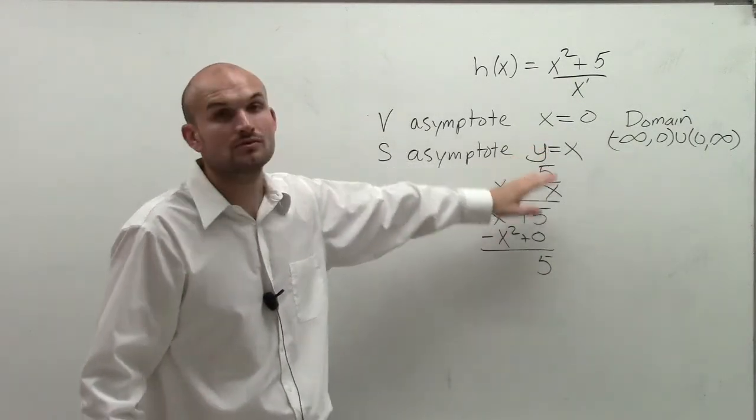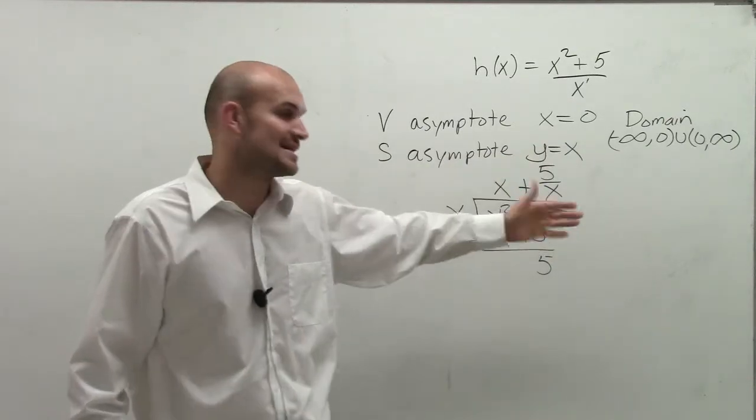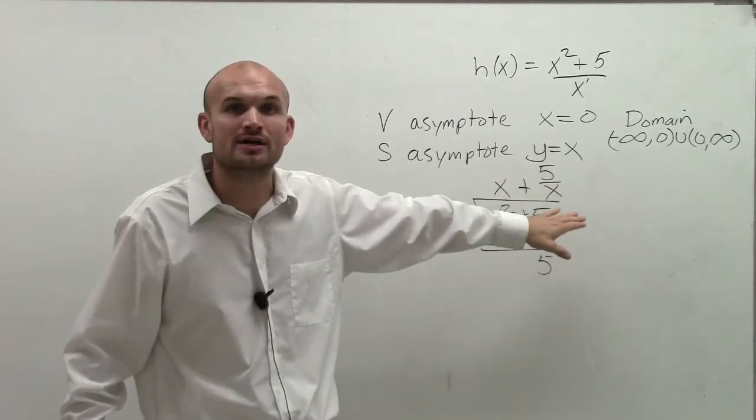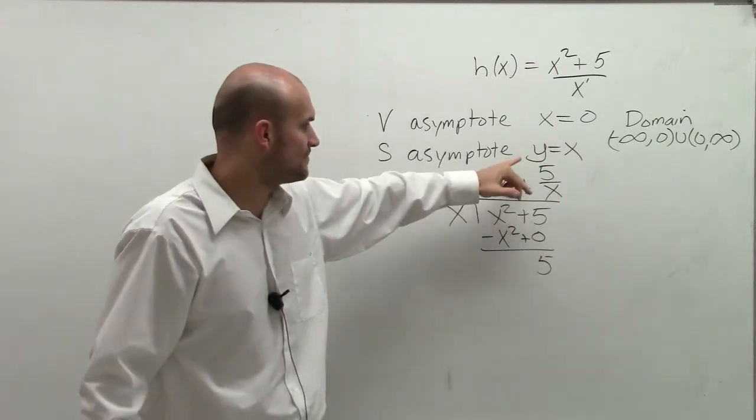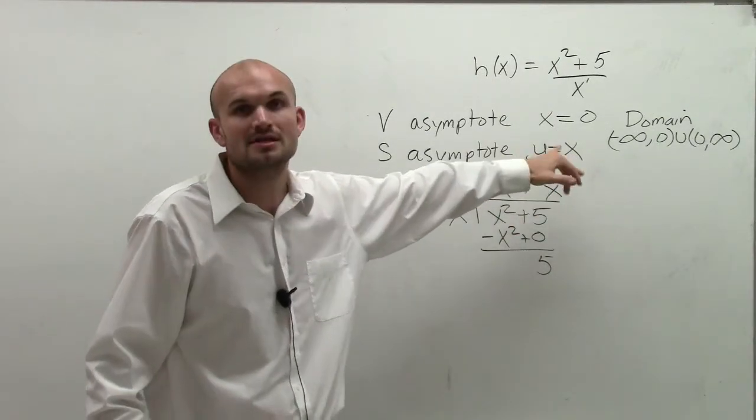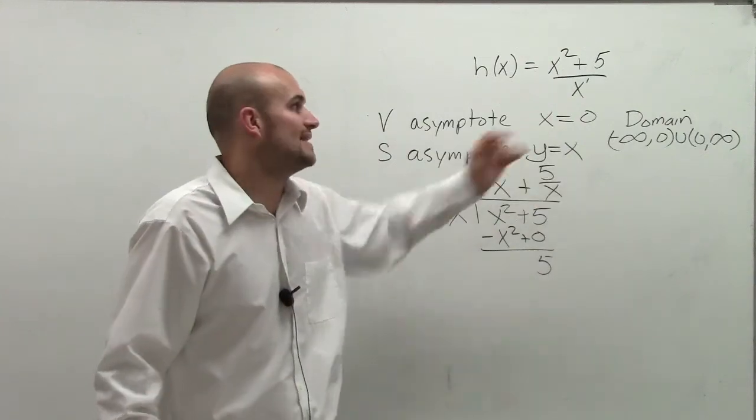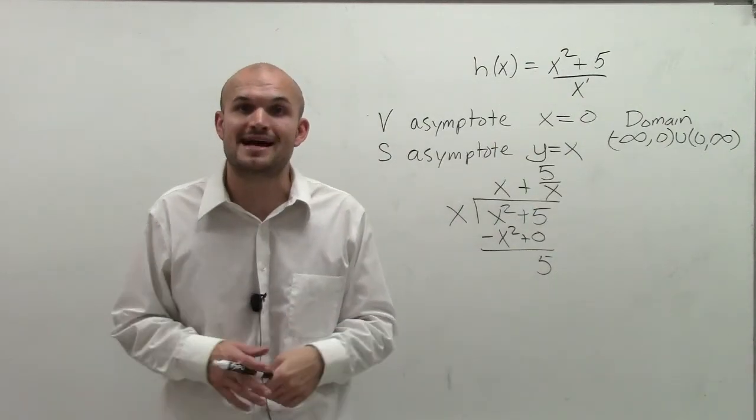So it's going to be graphing the line y equals x is going to be our slant asymptote. We are going to disregard our remainder. And we're just going to graph our divisor, as we could say y equals our divisor, and that's going to be the line of our slant asymptote.